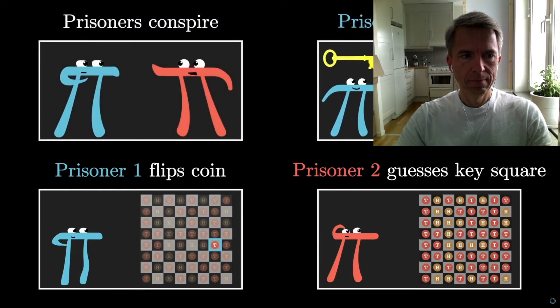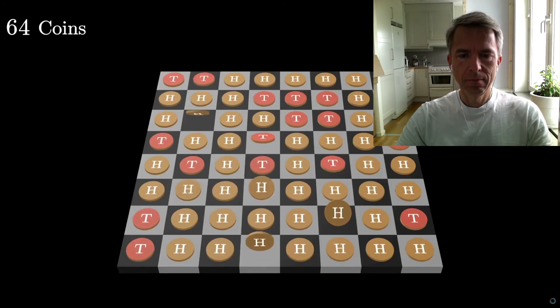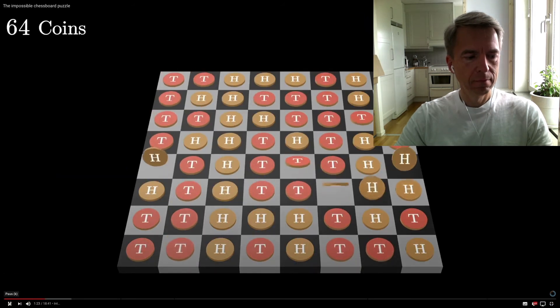As is typical with these puzzles, the two of you can strategize ahead of time if you want, but you won't know what the specific layout of heads and tails is. And moreover, the warden can listen in on your strategy and do their absolute best to thwart it with some adversarial arrangement of the coins and the key.